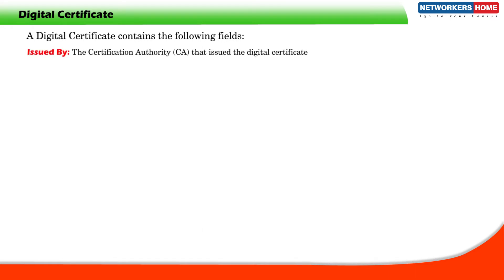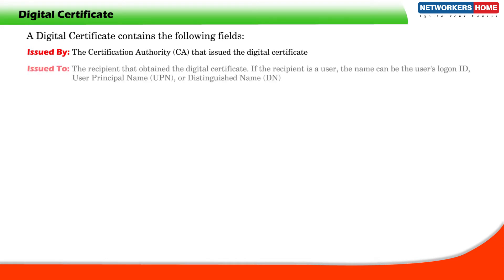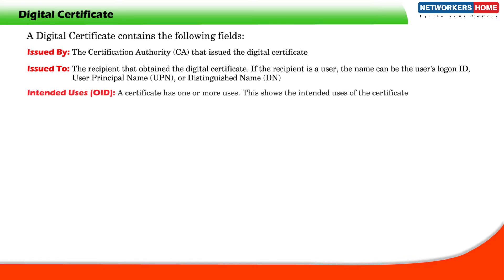Issued by: The certification authority that issued the digital certificate. Issued to: The recipient that obtained the digital certificate. If the recipient is a user, the name can be the user's login ID, user's principal name, or distinguished name. Intended uses: A certificate has one or more uses, and this field shows the intended uses of the certificate.